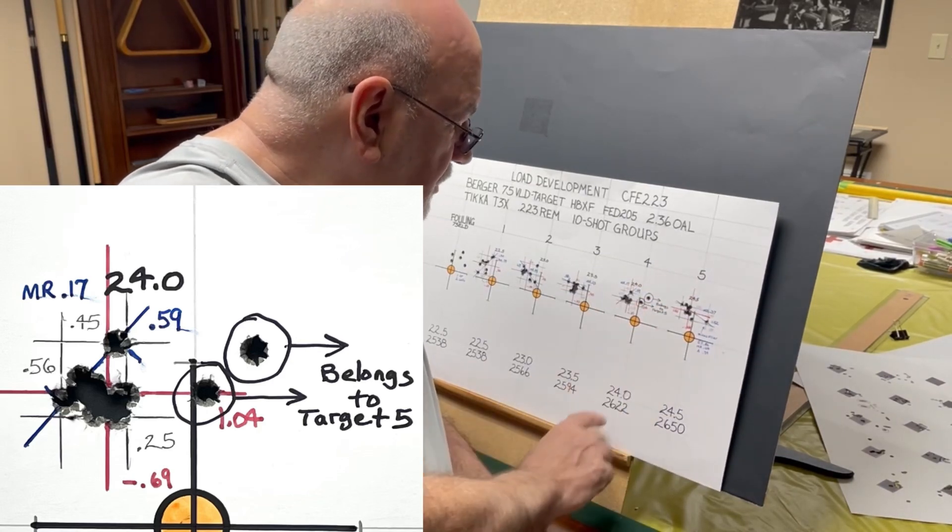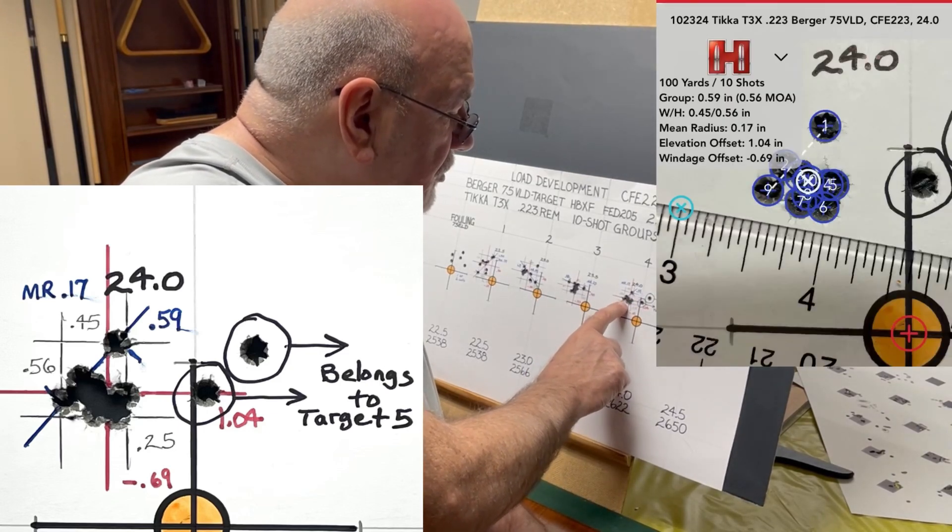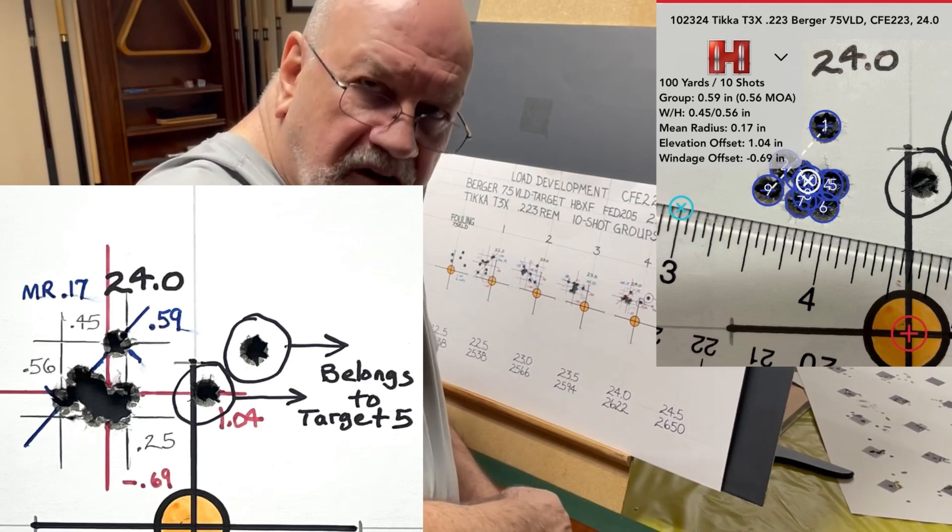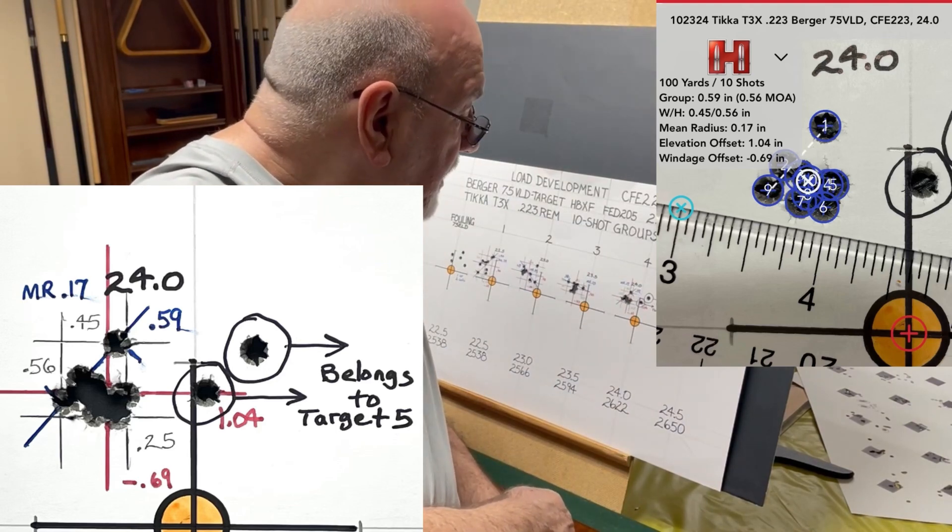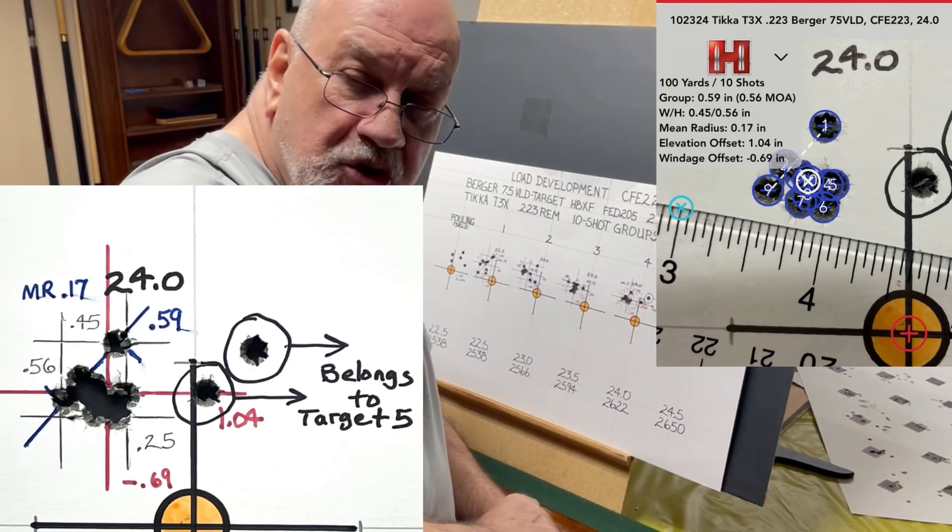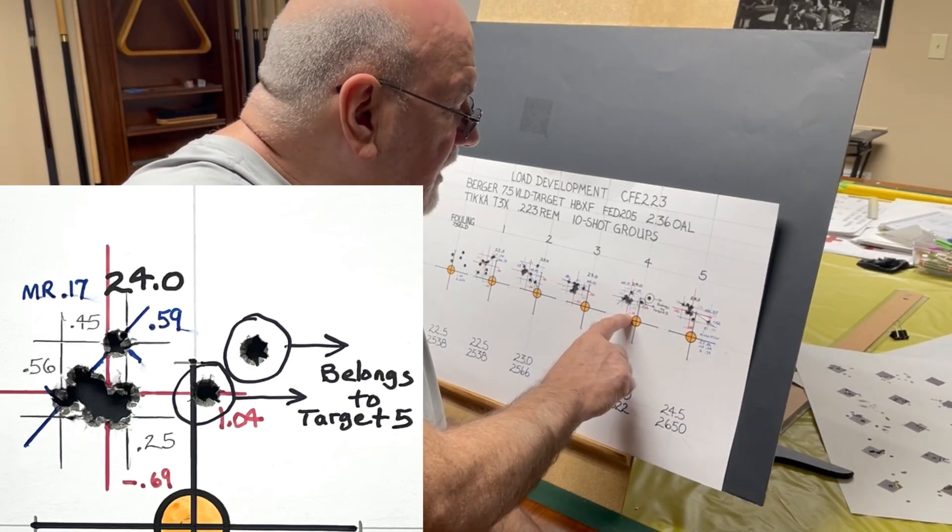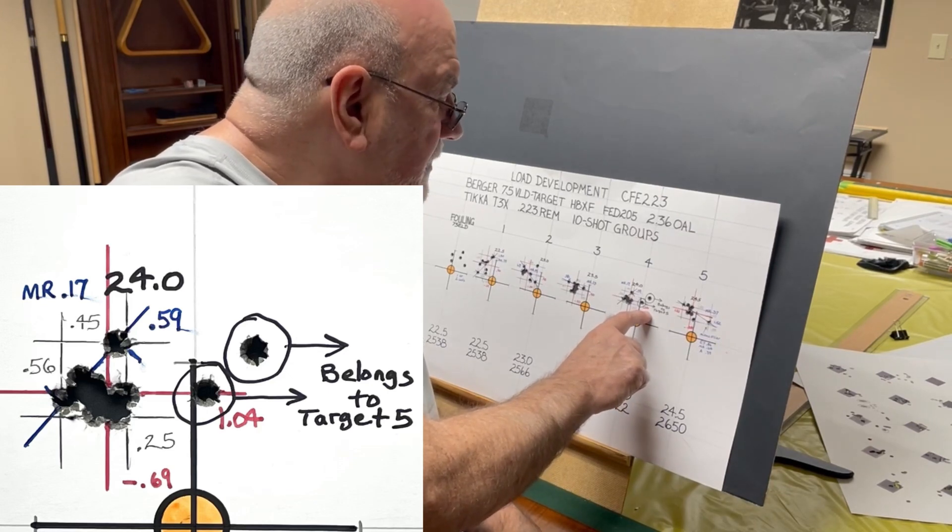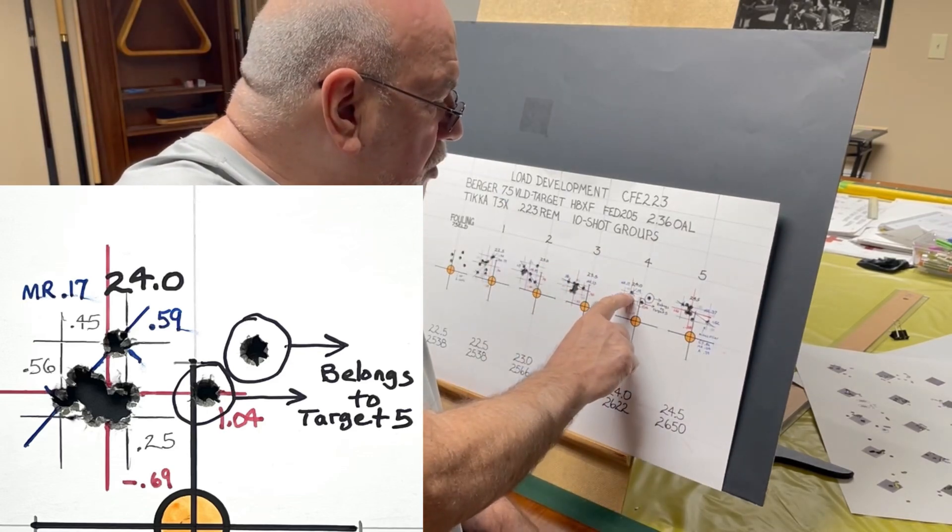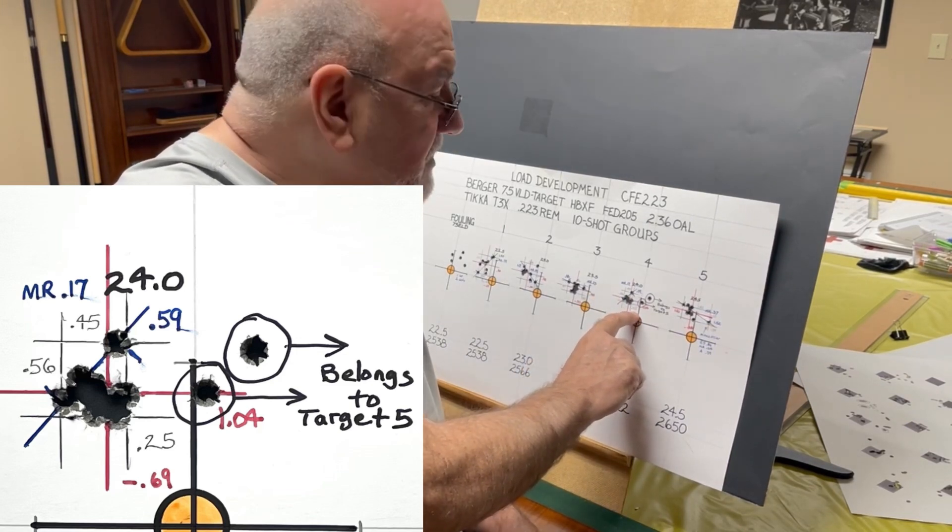Looking at the group that I shot at 24 grains, we've got one ragged hole right here with nine shots through one ragged hole and then we have one flyer off to the side. We have an extreme spread of 0.59 inches, so I think that's pretty good for 10 shots. We have a mean radius of 0.17 so that gives you an average group size of 0.34. We're shooting 69 hundredths to the left and 1.04 inches high, so as we're increasing that charge weight that rifle is shooting a little bit higher. We have a width of 0.45 inches and a height of 0.56, so that gives us an area of 0.25 inches.